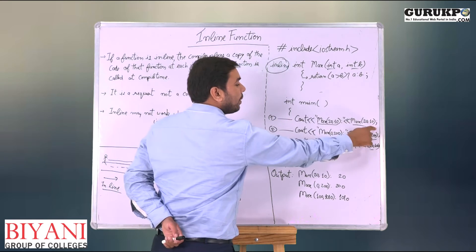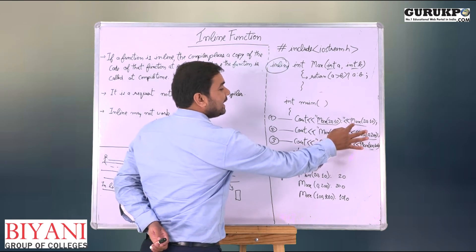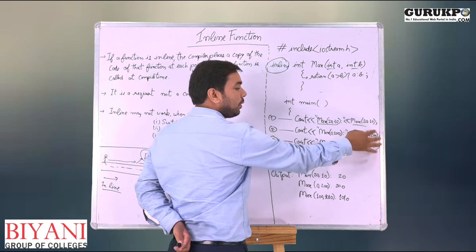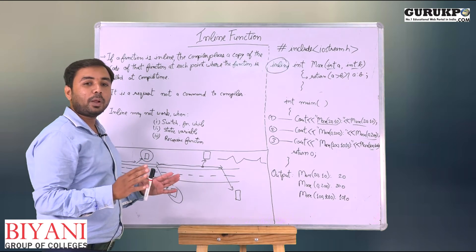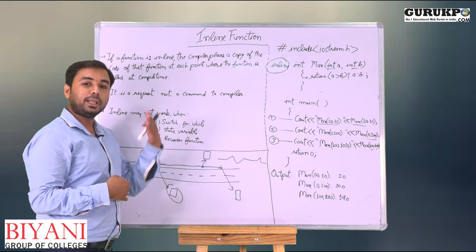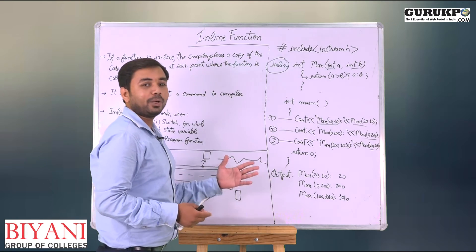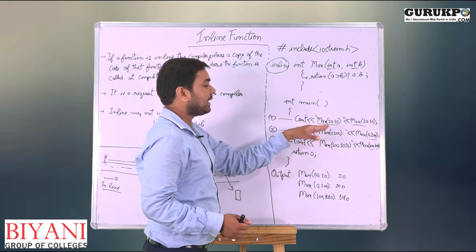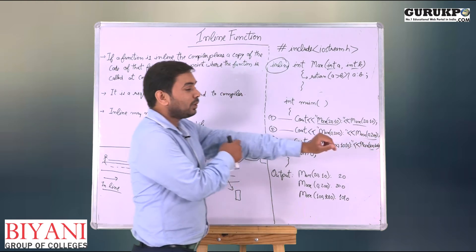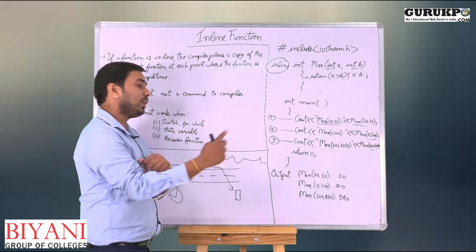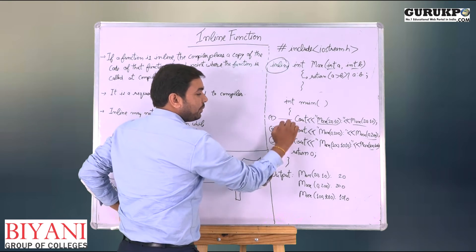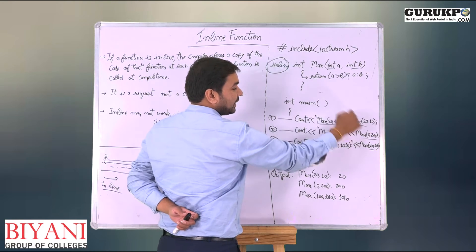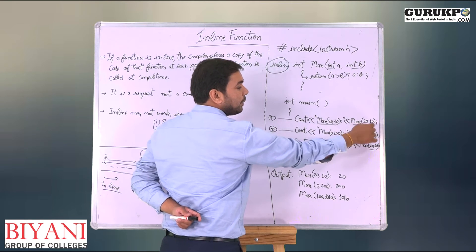When the function is inline, the compiler places a copy of the code of that function at every function call location. So when we run the program, it starts at the main function and wherever there is a max function call, the function code is already copied there — so the compiler does not have to go in and out.